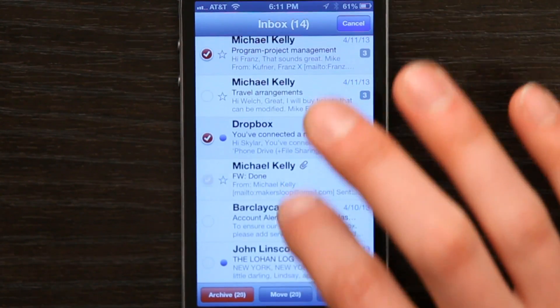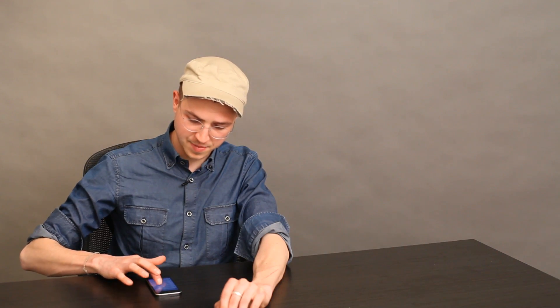So I could highlight things as fast as I could tap and then tap archive and it would send them to my archive. If it said delete, it would delete them permanently.